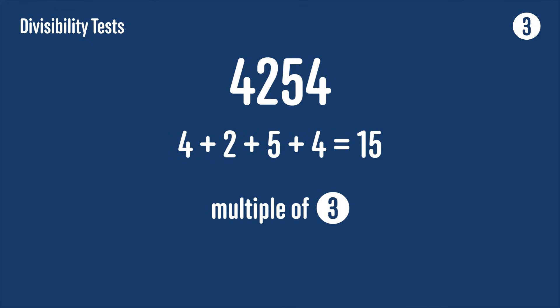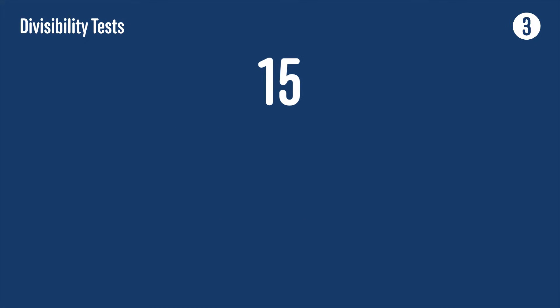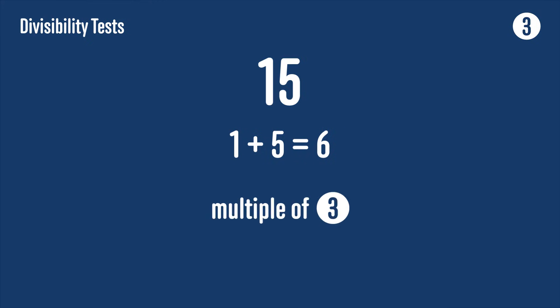If you wanted to, you could even apply the test again to check. The digit sum of 15 is 1 + 5 = 6, and since 6 is a multiple of 3, then 15 must be too. Of course it's only worth applying the test again if the digit sum you end up with is a much larger number.